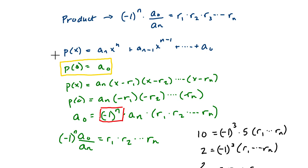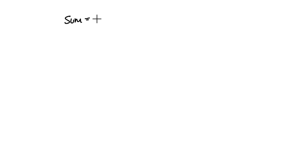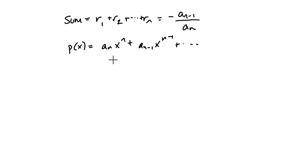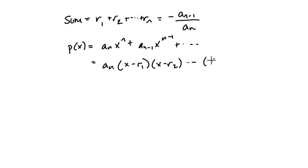Next we look at the sum of the roots. What Vieta's formula says is that the sum of the roots — r1 plus r2 all the way up to the nth root — has to equal the opposite of the ratio of the second leading coefficient divided by the first. So how can we prove this? Again, polynomial in standard form: leading coefficient times x to the n, plus the next coefficient times the next power, and then a bunch of stuff we don't need. We're just focusing on those two terms. Critical to this approach is that we can factor this into a leading coefficient times x minus r1, times x minus r2, all the way to x minus the nth root.